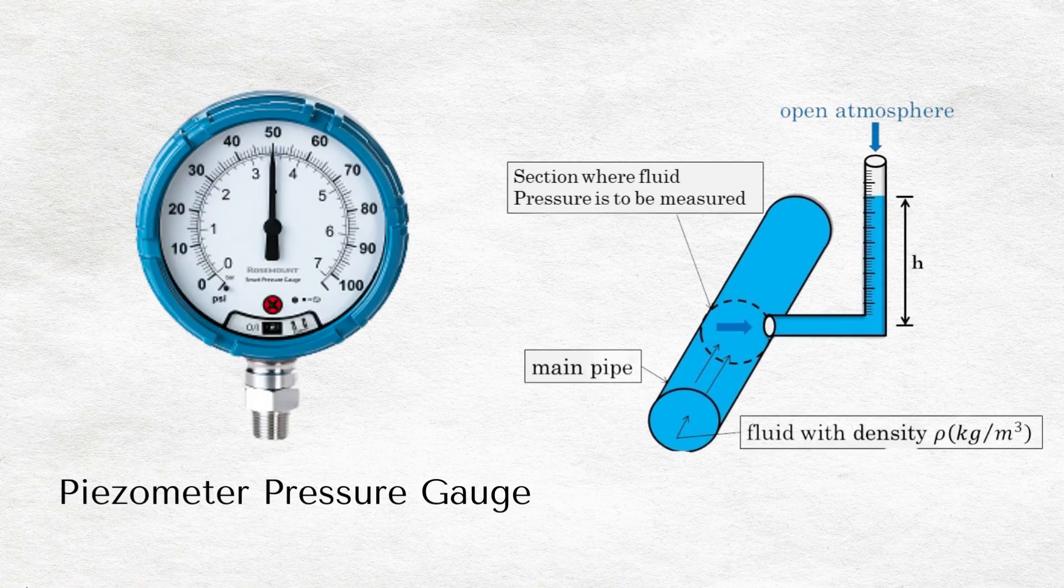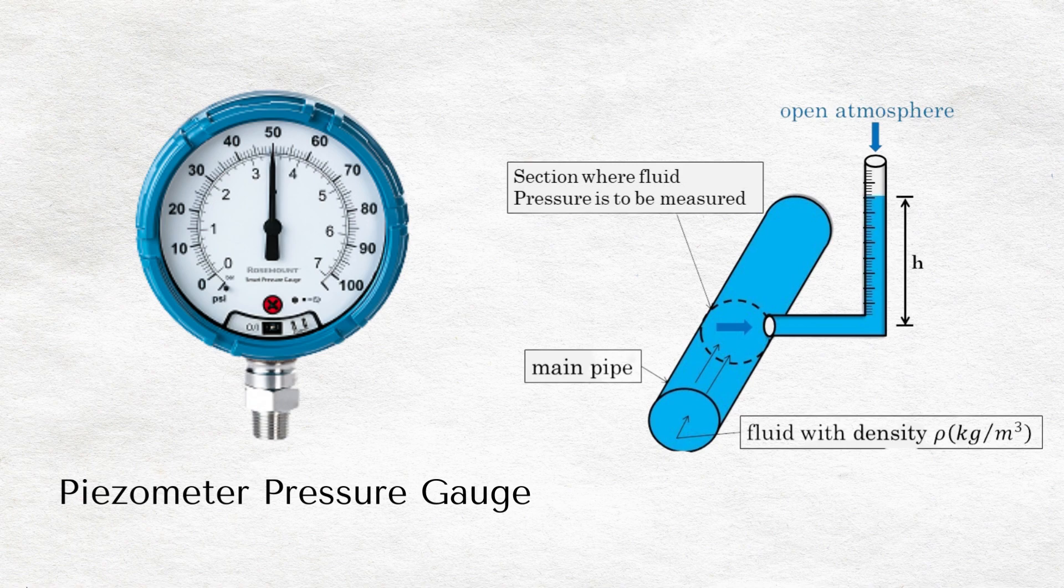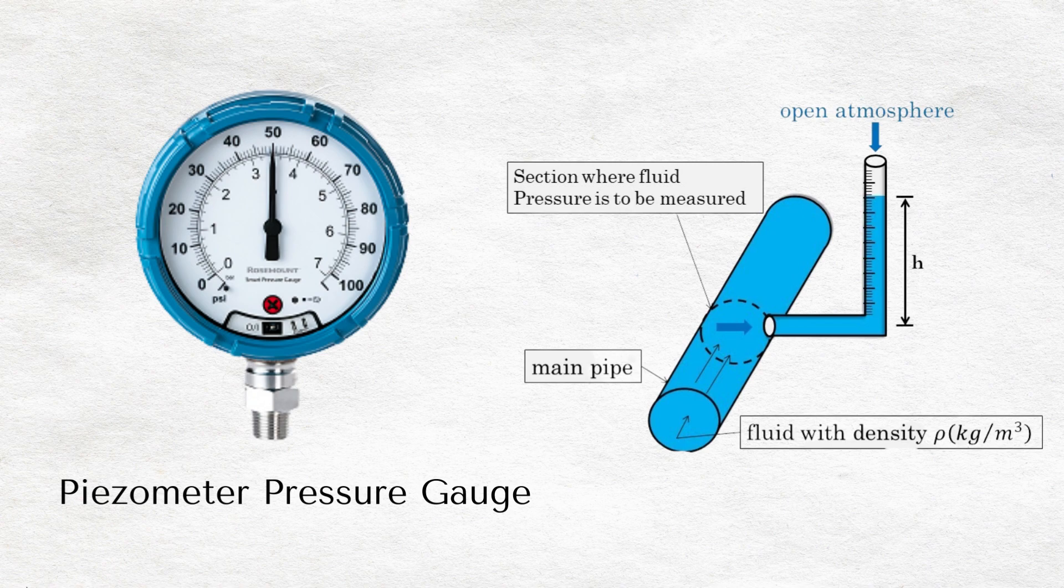Piezometer pressure gauge. A piezometer is a type of manometer that is used to measure the medium pressure range of liquids. It is a simple glass tube that is open at both ends. One end is connected to a pipeline where the pressure of a fluid is to be measured, while the other end is open to the atmosphere.